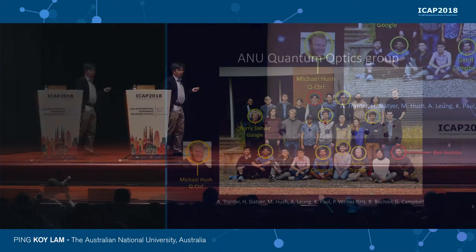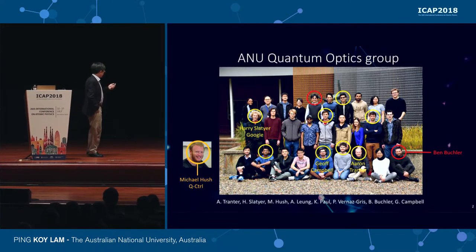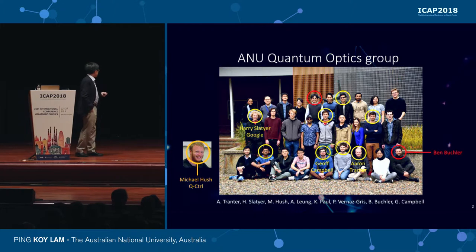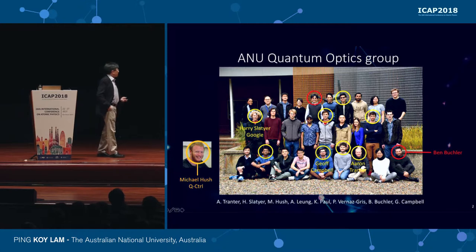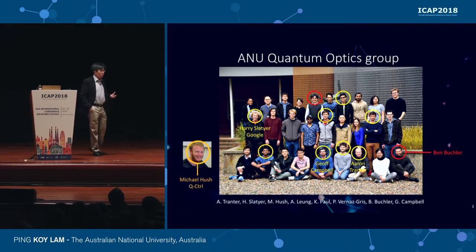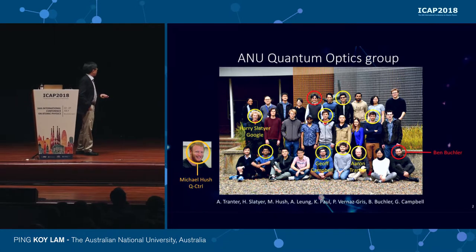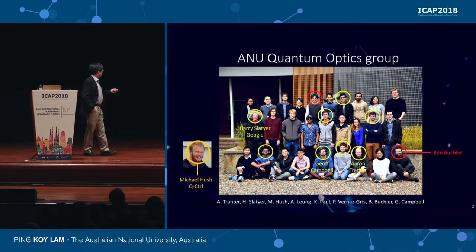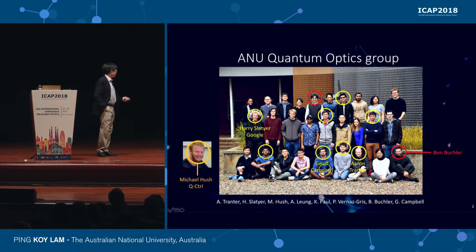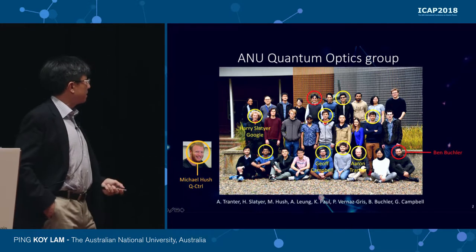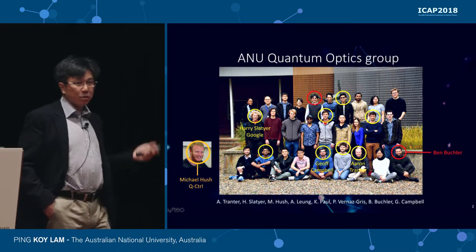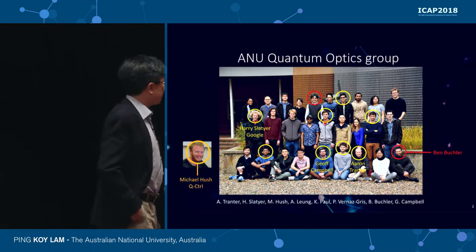Here's a photo of my group. I'd like to mention Michael Hush and Harry Stetcher, who has since moved on to industry. They are two of the people who made the neural network computer code. And a special mention to the very talented postdoc Jeff Campbell, and Aaron Trenter is the first author, and Ben Buchler and I manage the program together.